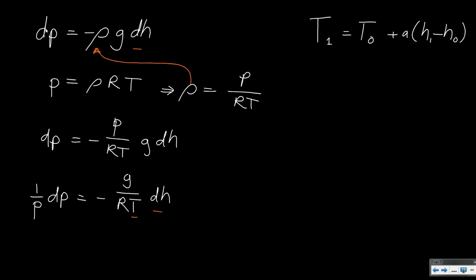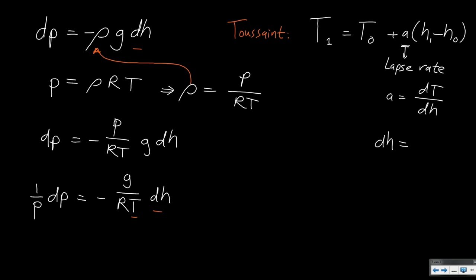This is called the formula of Toussaint, which gives temperature as a function of altitude. The character A is the lapse rate, or temperature gradient, given in Kelvin per meter. It indicates the change of temperature per change in altitude, in other words dT divided by dH. We can also write this as dH equals dT divided by A, which is useful for our equation because substituting this expression for dH gets us much closer to something we can solve.